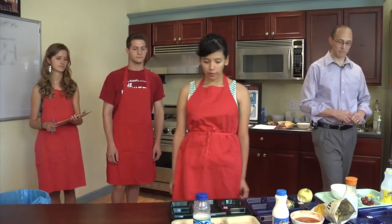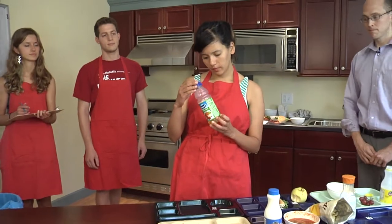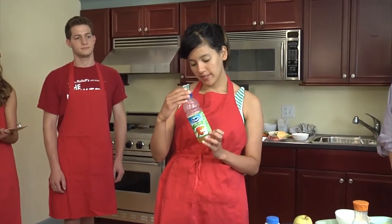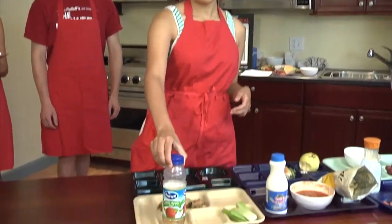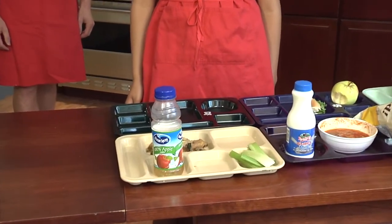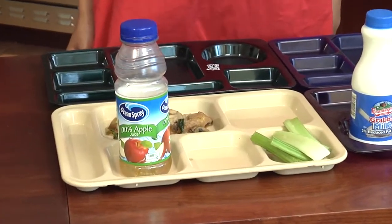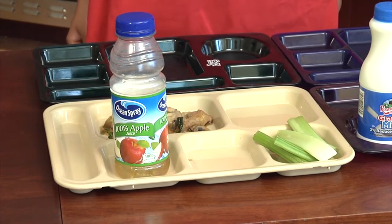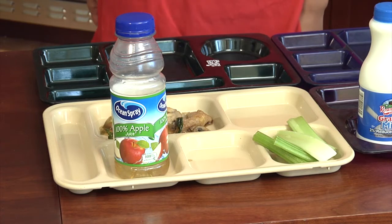For our first tray, for the apple juice, it looks about like half is left over, so I would say two. For the celery, it looks like it wasn't touched, so all of it's left over, so I would say four. And then for the entree, I would say half of it's left over, so I would give that a two.